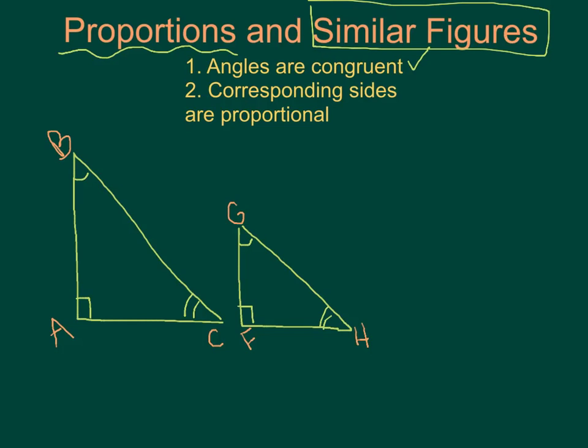And also, corresponding sides are proportional. So let's look. That would say that side AB, if you look at a ratio comparing it to FG, it should be equal to if you compare two other corresponding sides together. In other words, AC divided by FH should be equal to AB divided by FG.